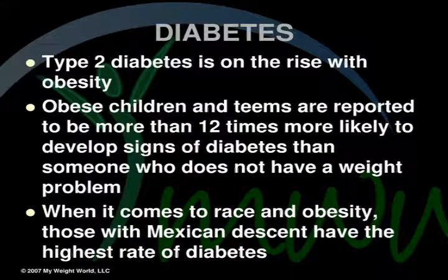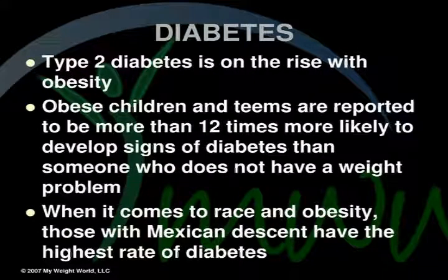Type 2 diabetes is on the rise with obesity in children. Obese children and teens are reported to be more than 12 times more likely to develop signs of diabetes than someone who does not have a weight problem. When it comes to race and obesity, those with Mexican descent have the highest rate of diabetes in children.